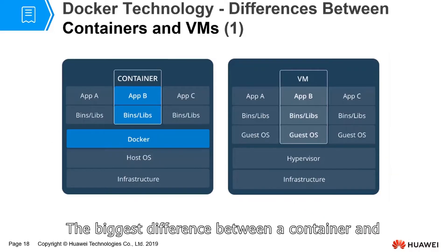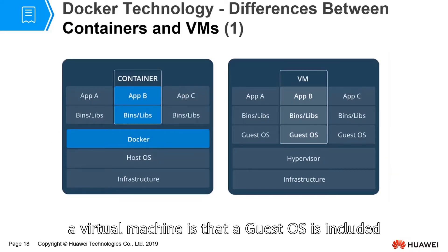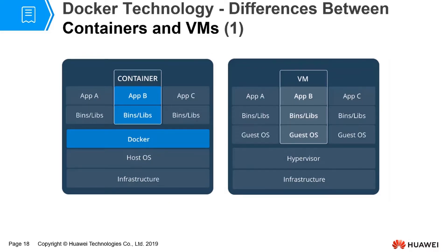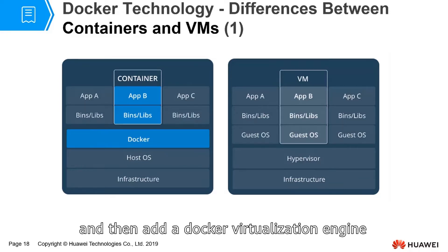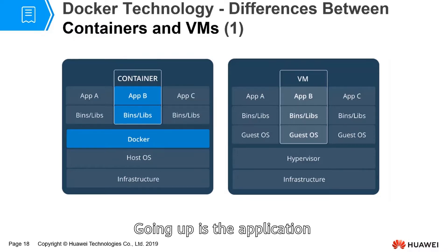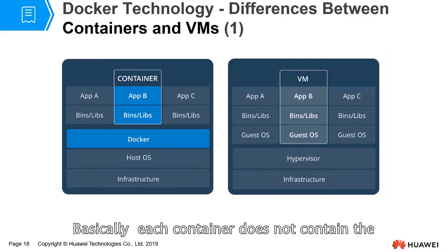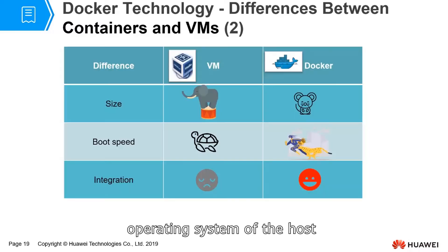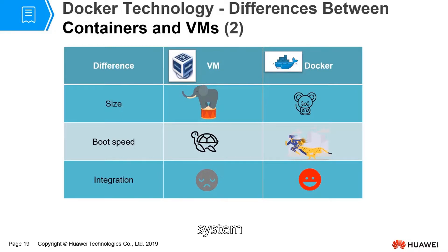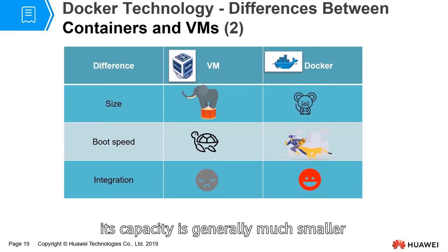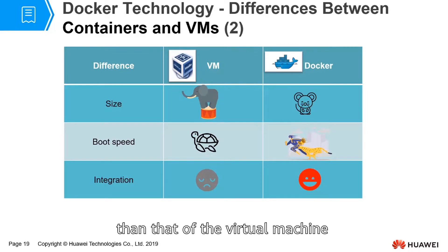The biggest difference between a container and a virtual machine is that the guest OS is included in the virtual machine. The container just runs on the host OS, and then adds a Docker visualization engine in the middle. Going up is the application. Basically, each container does not contain the operating system of the host. Since the container does not contain the operating system, its size is generally much smaller than that of the virtual machine.